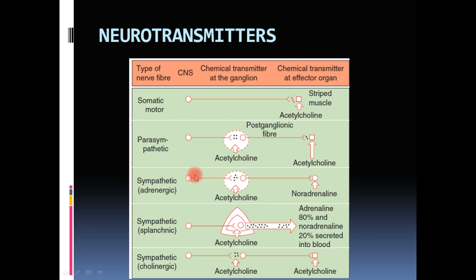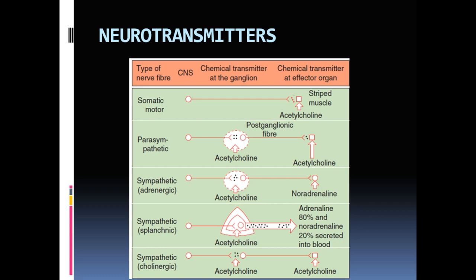The sympathetic preganglionic neurons also secrete acetylcholine and are called cholinergic neurons. However, the sympathetic postganglionic neuron can be called either an adrenergic neuron, a splanchnic neuron, or a cholinergic neuron, depending on what it secretes. So the sympathetic preganglionic neuron always secretes acetylcholine, but there are three different possibilities for the postganglionic neuron.